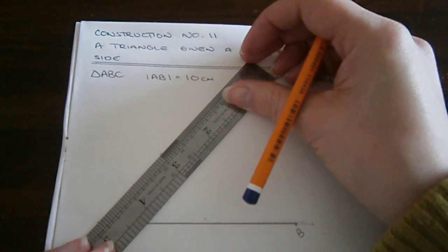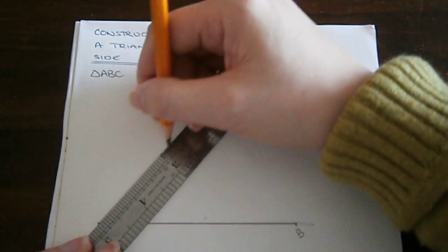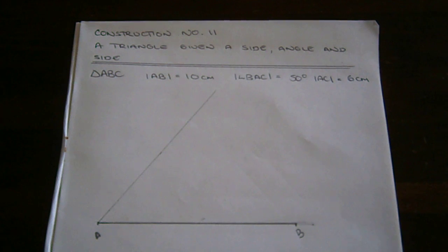Drawing a light construction line. We draw a ray from A going through what will be point C.